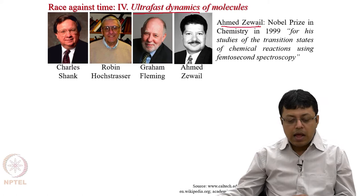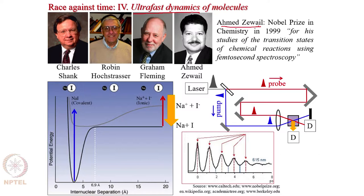Here is a typical example of how this spectroscopy works, based on work by Ahmed Zewail. First, a photo process is initiated. What is shown is a potential energy diagram - sometimes called a potential energy surface diagram - which is an energy level diagram of a diatomic molecule. If you have studied quantum mechanics, you know that diatomic vibrations can be approximated as harmonic motion at the bottom of the well, though in reality they are anharmonic.